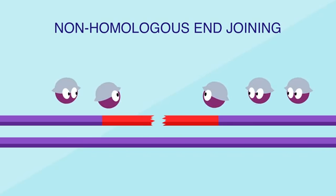Very high frequency radiation, like gamma rays and x-rays, cause a different kind of damage. They can actually sever one or both strands of the DNA backbone. Double strand breaks are the most dangerous — even one can cause cell death.